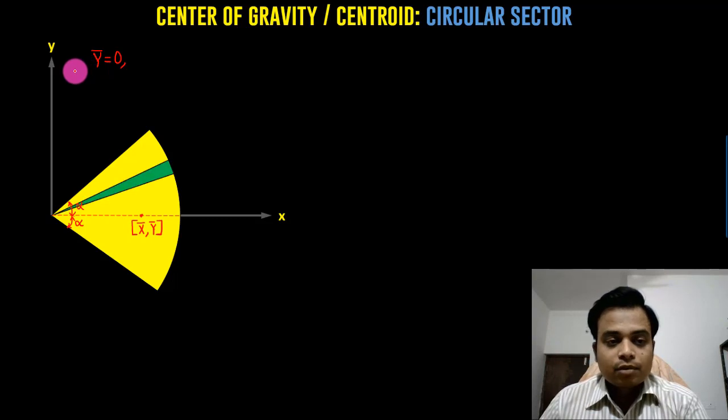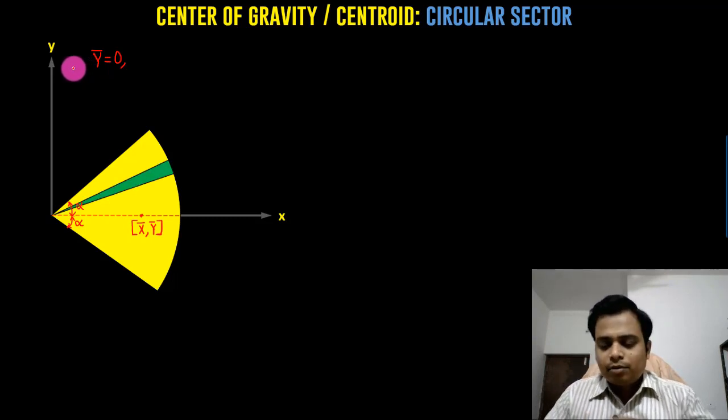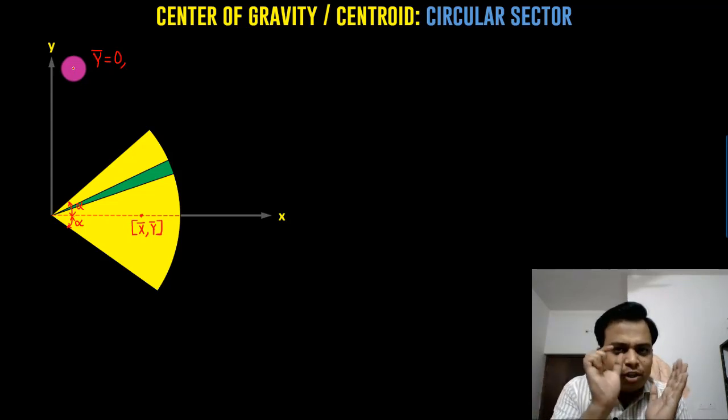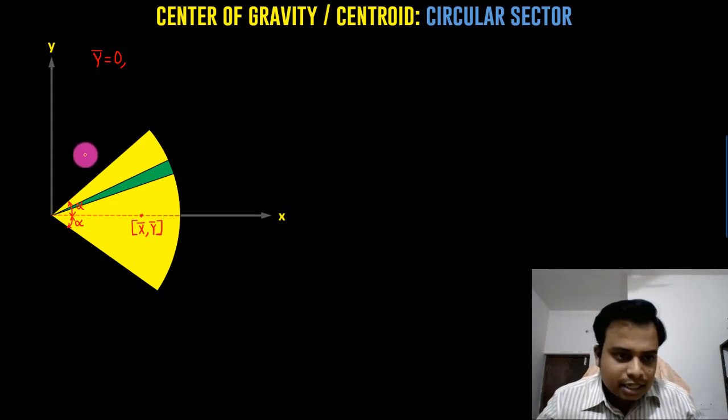We need to take a triangular strip. You can assume this circular sector to be composed of infinite very small triangular strips stacked up in such a manner so that you can have a circular sector. This is exactly what we'll try to achieve.